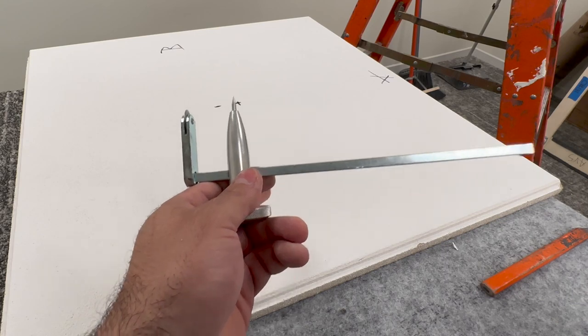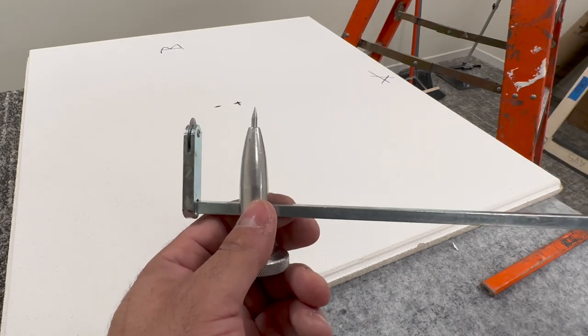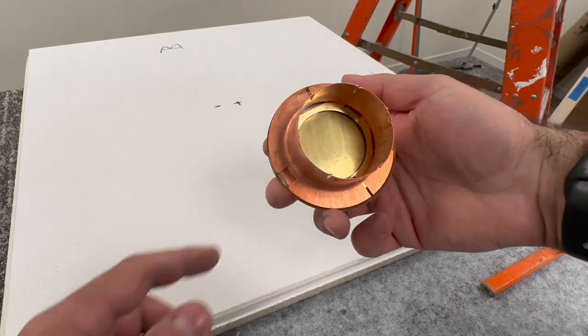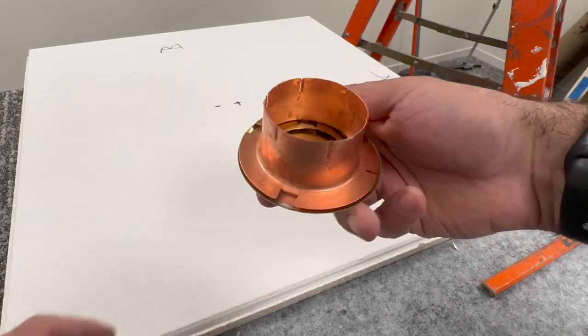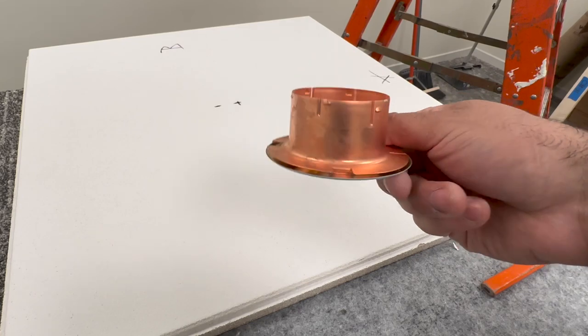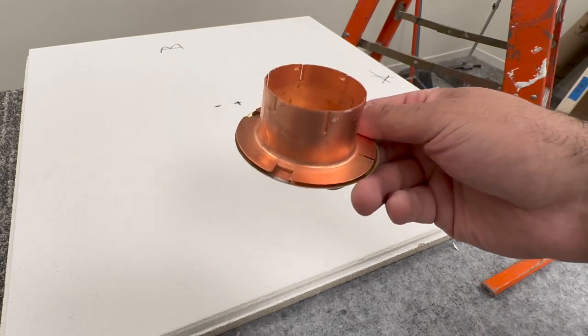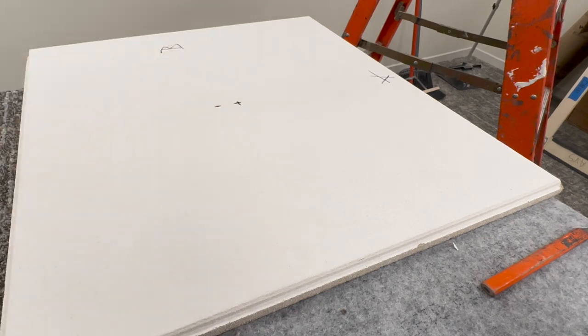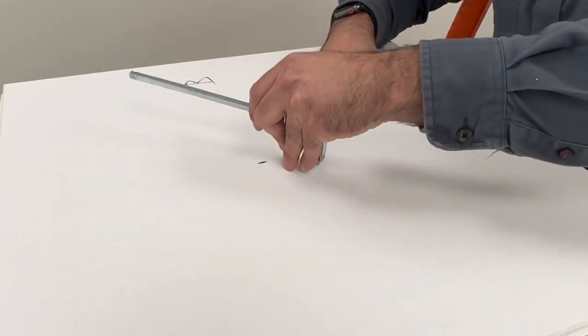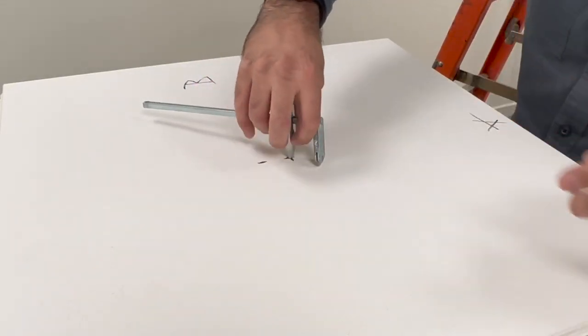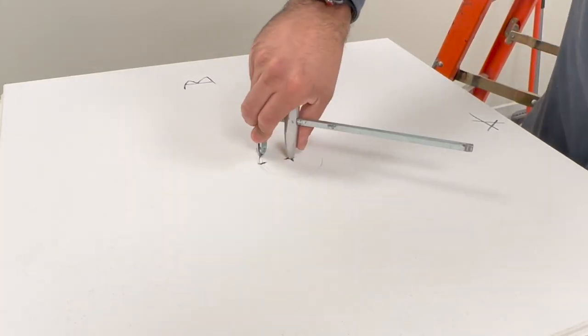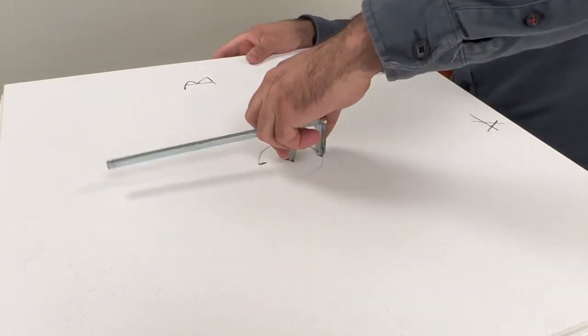The reason why I have a little bit bigger is because we have this flange here that's going to cover the actual hole even if it's bigger. So let's take this tool and make a circle, right in the center, all the way around.